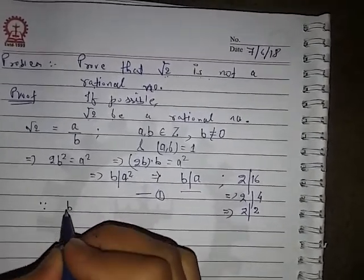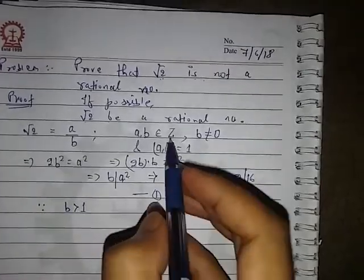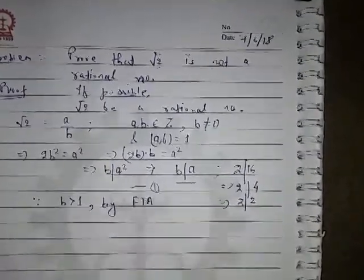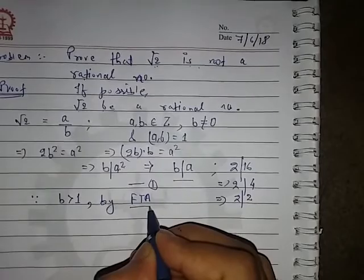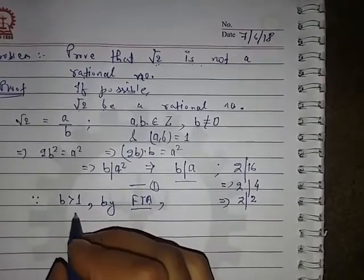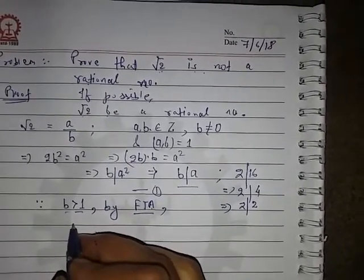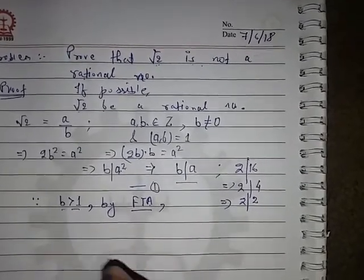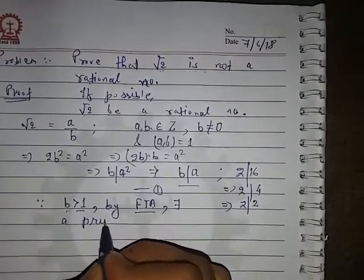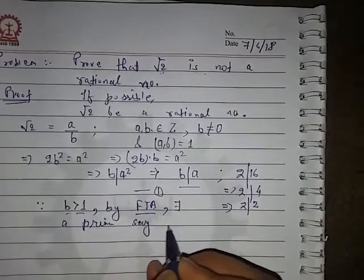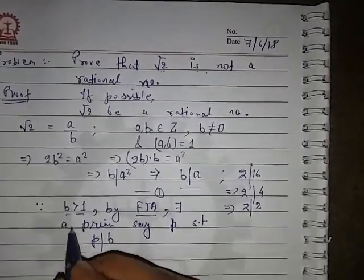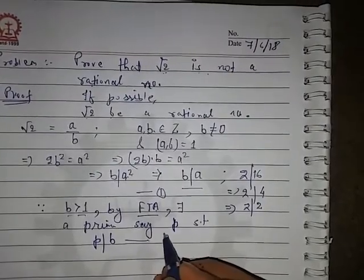Since b is greater than 1 and it is an integer, by the Fundamental Theorem of Arithmetic — abbreviated as FTA — which states that any integer greater than 1 can be expressed as a product of primes, there exists a prime, say p, such that p divides the integer b. Let this be equation number 2.